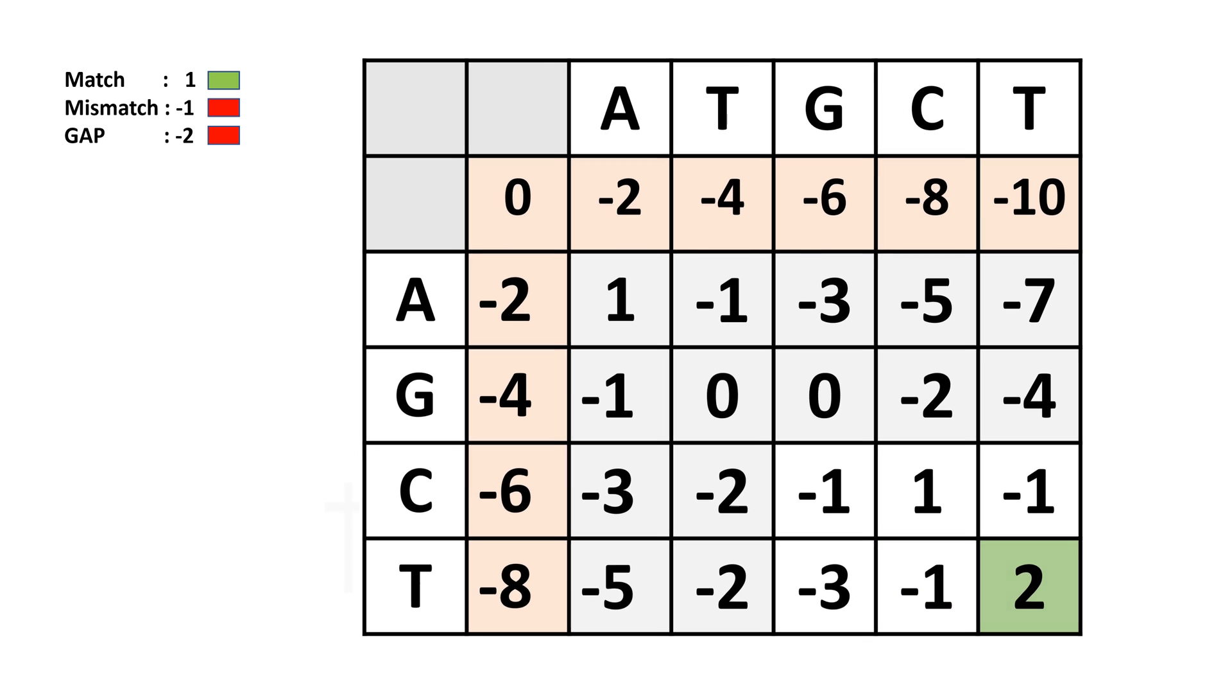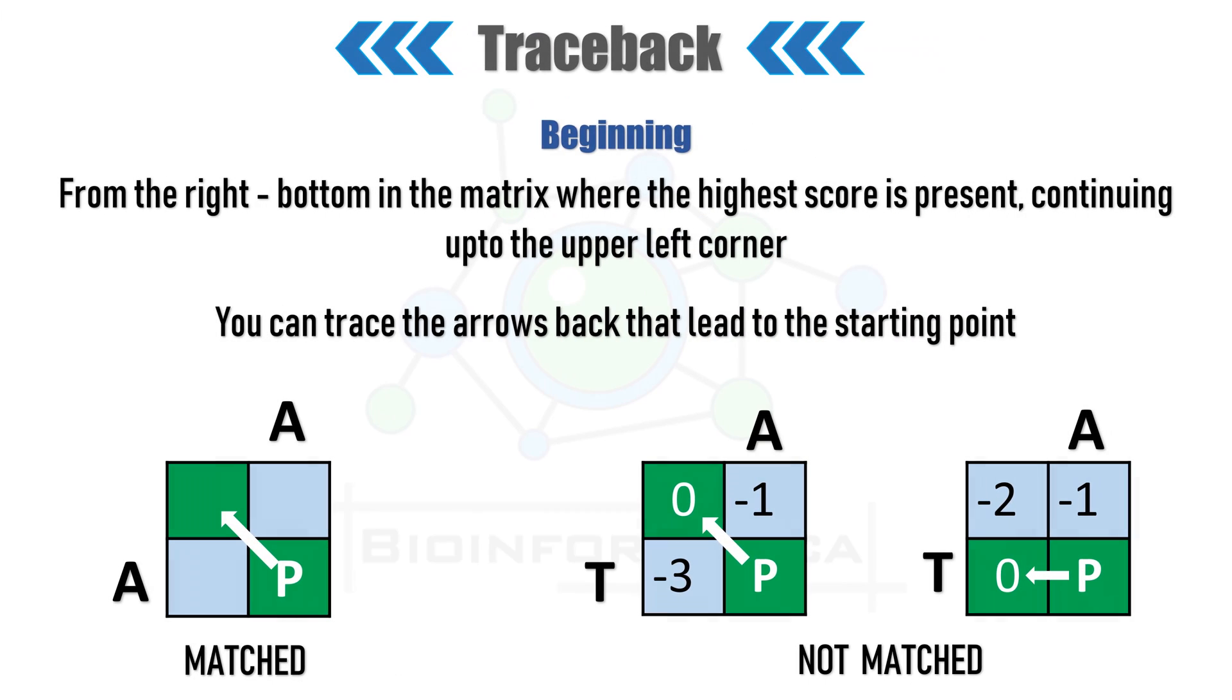After filling the matrix, we can proceed to the next step: traceback. We begin the traceback step from the right bottom corner of the matrix, where the highest value lies, and continue tracing back to the upper left corner where we started the matrix filling process. It's a relatively simpler process. We just have to trace the arrows back which lead us to the end corner. If the letters corresponding to the box are the same, the traceback will go diagonally. If the letters are not matched, the traceback will go towards the highest value neighbor.